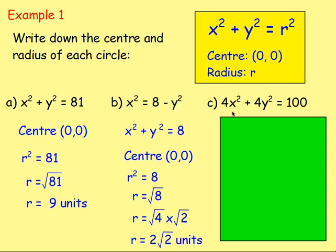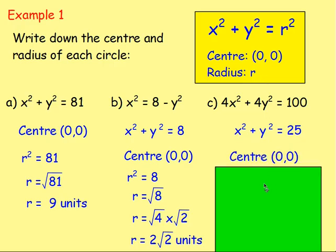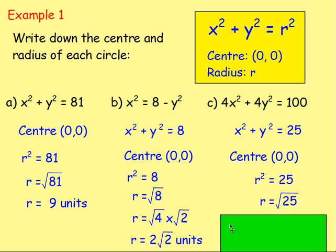Example c: 4x-squared plus 4y-squared equals 100. What would you have to do first? Good — divide every single term by 4. Dividing by 4 gives x-squared plus y-squared equals 25. The centre is (0,0) because it's of the form x-squared plus y-squared. r-squared equals 25, so you square root that, meaning the radius is 5 units.